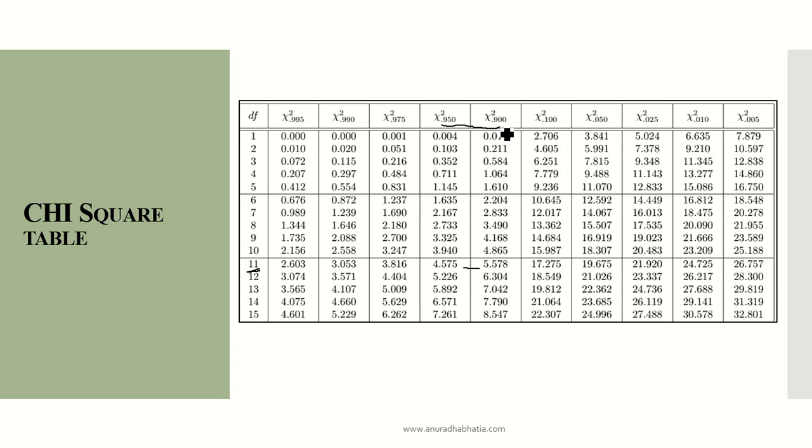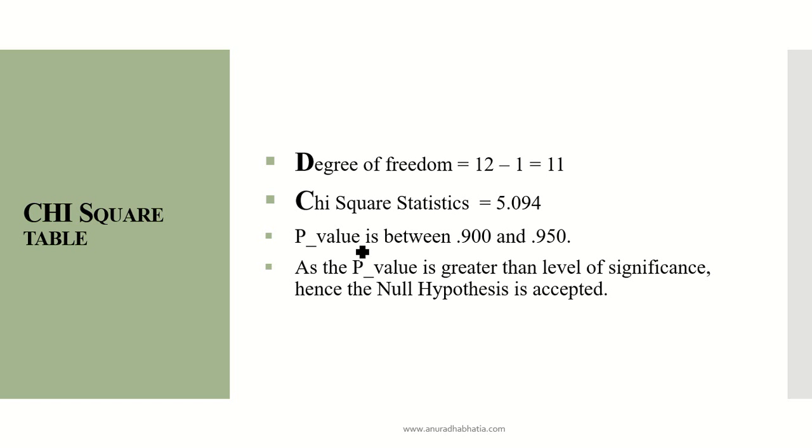The p-value for chi-square statistics of 5.094 and degree of freedom 11 lies between 0.900 and 0.950. As the p-value is greater than the level of significance (0.05), the null hypothesis is accepted. This is how the chi-square test is used from the table. Thank you.